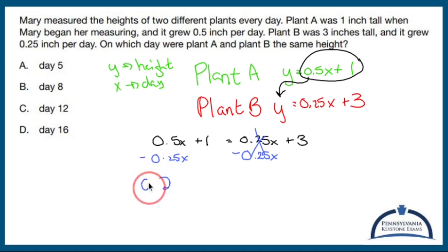So I have 0.25x plus 1 equals 3. Subtract 1 from both sides, and I have 0.25x equals 2.